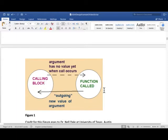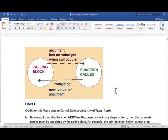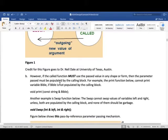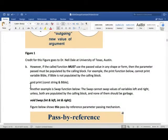Credit for this figure goes to Dr. Nell Dale at University of Texas Austin. The second scenario is that if the called function must use the passed value in any shape or form, then the parameter passed must be populated by the calling block. For example, the print function below cannot print the variable Bible if Bible is not populated by the calling block. Void print const string pass-by-reference Bible cannot be garbage. You cannot pass anything that is garbage, so this has to be populated. This cannot be a placeholder, this has to have some value.